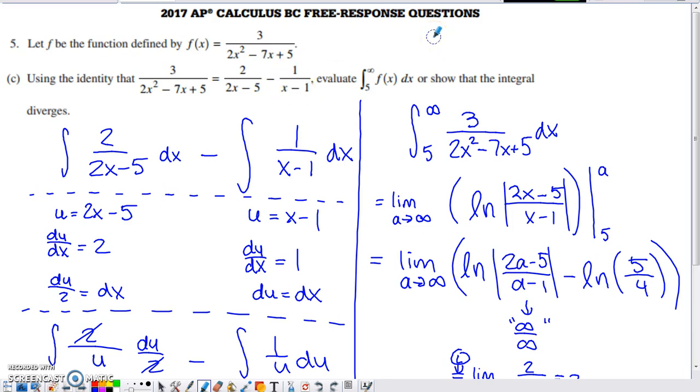Normally they would ask you to carry out that sequence on your own, so they were kind of nice in providing us with that relationship between the individual fraction we started with and the simpler fractions that it can be re-expressed as a difference by. Then they say, evaluate the integral from 5 to infinity or show that that integral diverges.